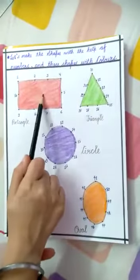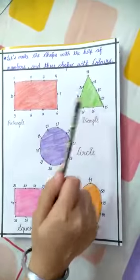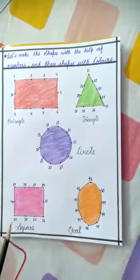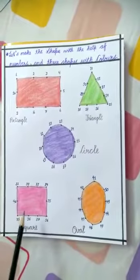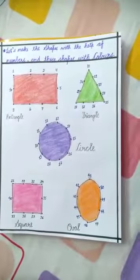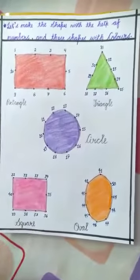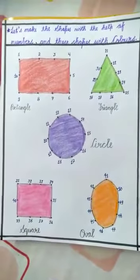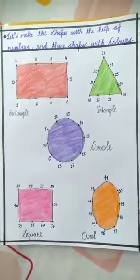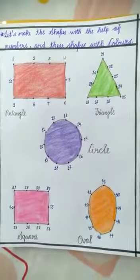Red color for rectangle, light green color for triangle, purple color for circle, pink color for square, and orange color for oval. Do this activity at your home and stay safe. Okay children, bye-bye! Take care and have a very nice day!